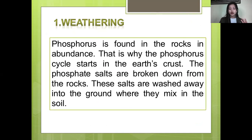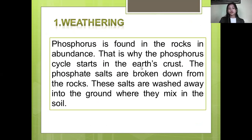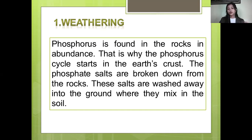It is not like the carbon cycle where there is carbon in the atmosphere, and not like the nitrogen cycle where there is nitrogen in the atmosphere. That is why the phosphorus cycle starts only in the earth's crust. The phosphate salts are broken down from the rocks and washed away into the ground, where they mix into the soil because of weathering and rain.